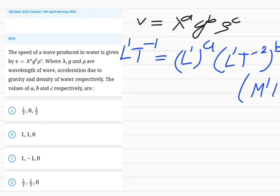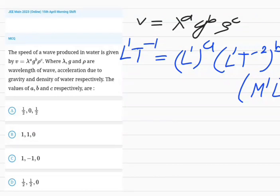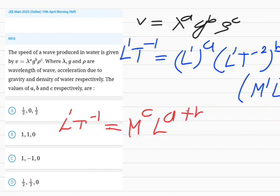From this, an equation will be generated. So we'll write L1 T-1 equals M's power is only in C. L's power is A here, plus B here. And T's power is only in B, so minus 2B.